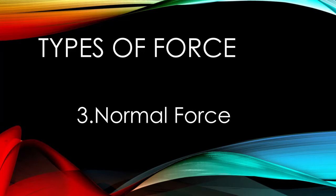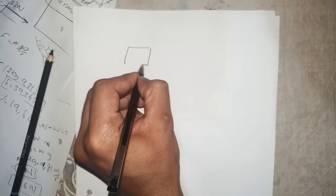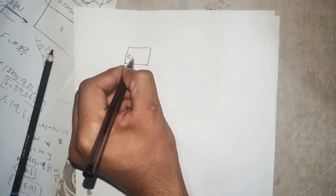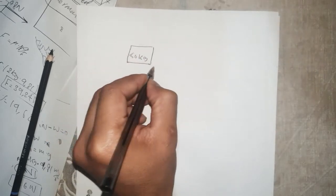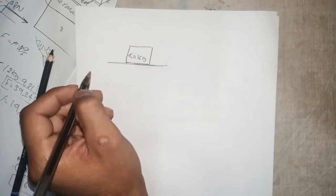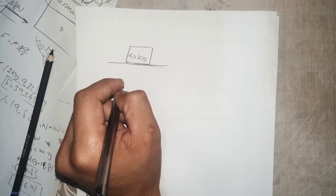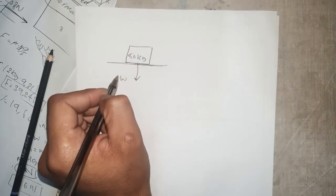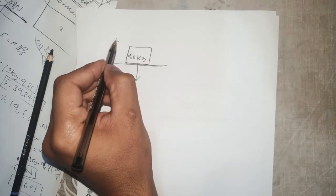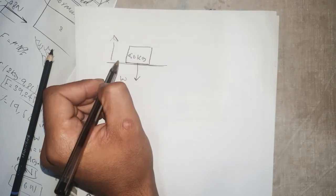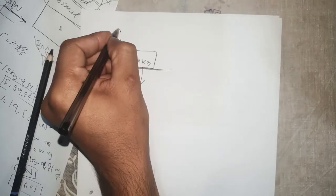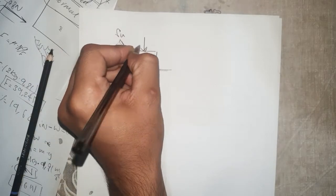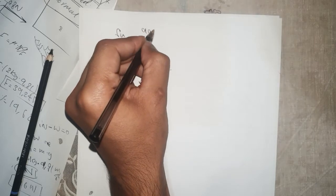For instance, if a person leans against a wall, the wall pushes horizontally on the person. So suppose we have a box here with a mass of 50 kg and it's resting on a surface. The forces that are acting here would be a weight force and also the normal force acting opposite to the weight force. We are also applying a 90 Newton force as well.